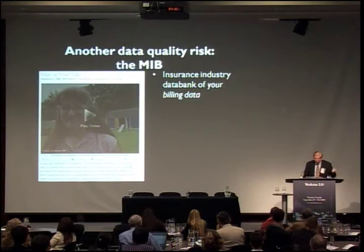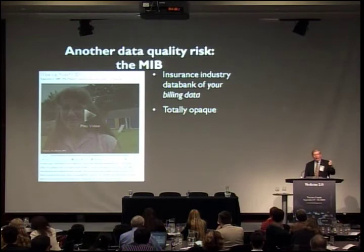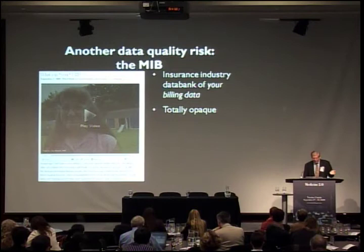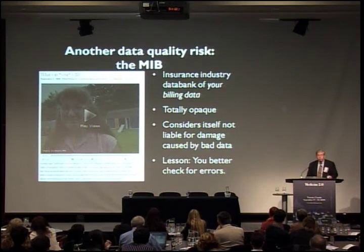The MIB is a private insurance industry data bank. I got in touch with them — they are totally opaque. You cannot find out stuff in there. Because they're similar to a credit bureau, you're allowed to get a copy of your records, but good luck really making sense out of it. And their lawyer started writing to me and made clear that they don't consider themselves liable for any damage they cause. So the lesson: you better check for errors. If you're an American, check into the MIB.